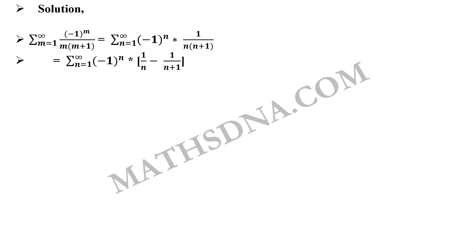Now the term on the right hand side can be divided in the form as 1 upon n minus 1 upon n plus 1. We can split the denominator. This gives us summation n running from 1 to infinity, minus 1 raise to n into 1 upon n minus 1 upon n plus 1.